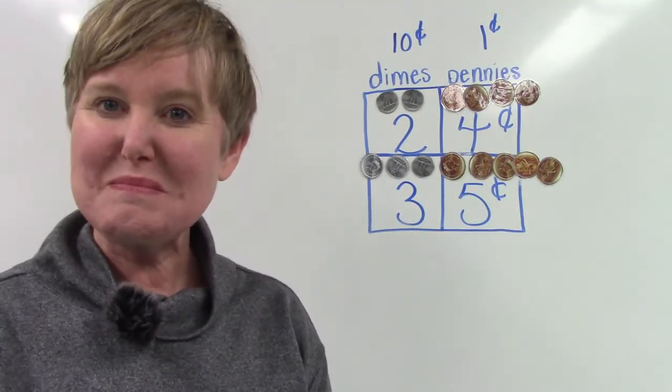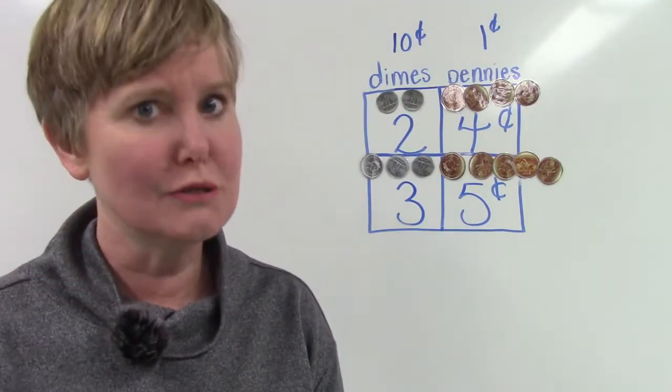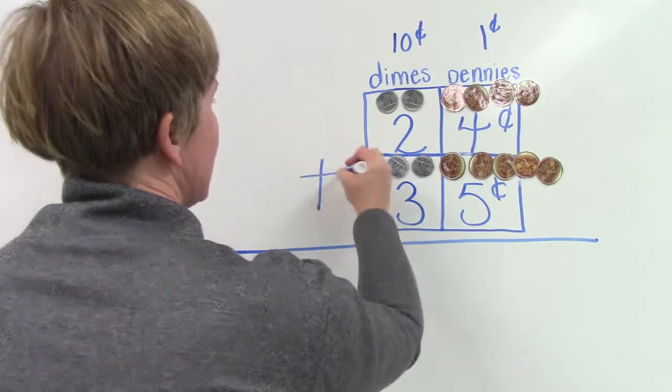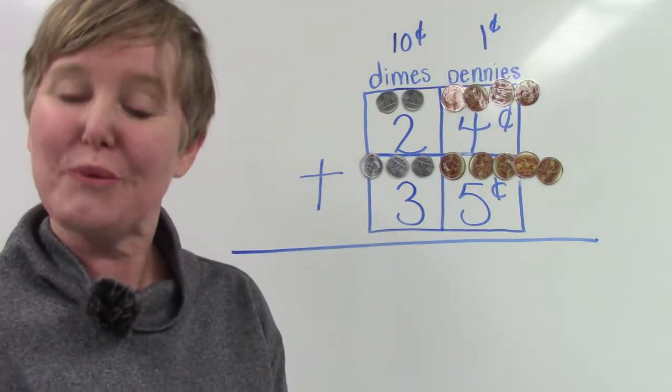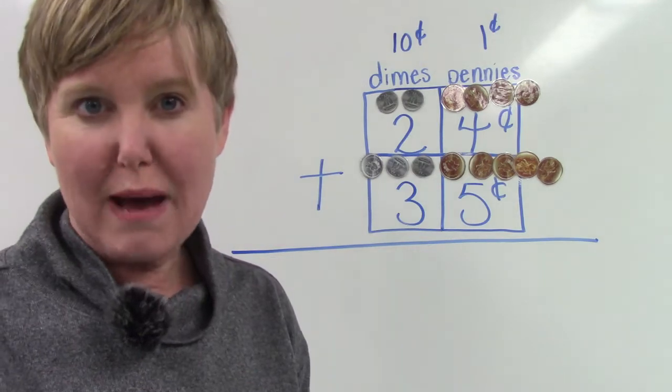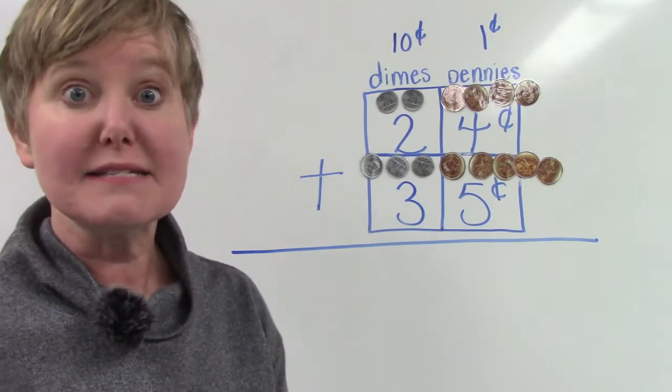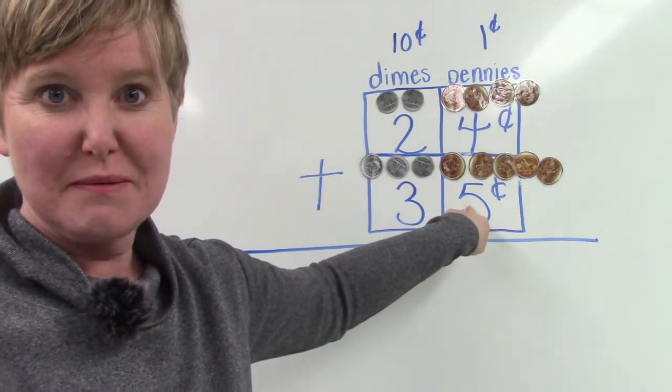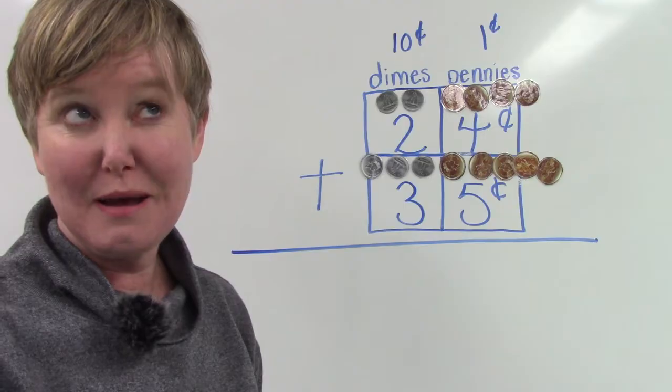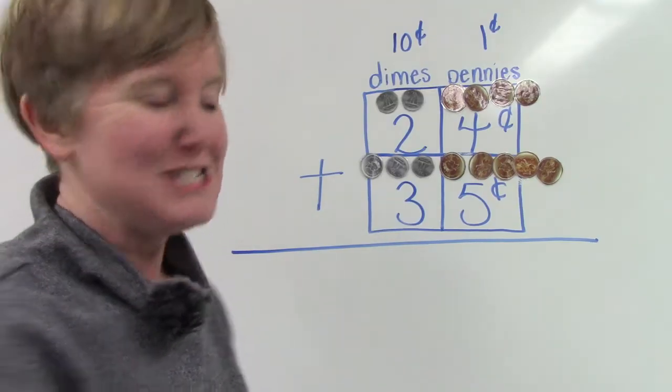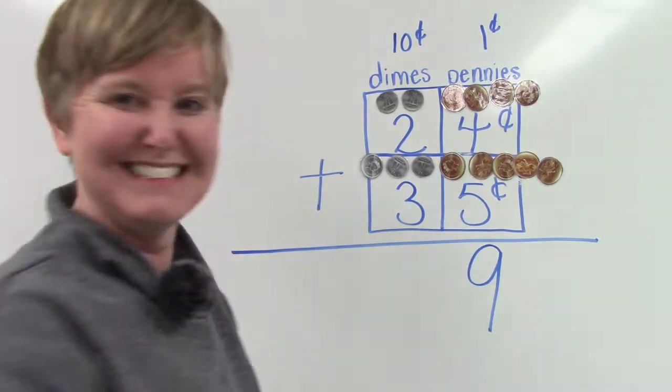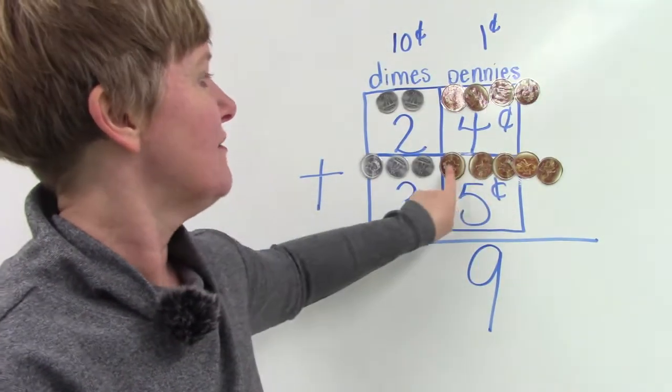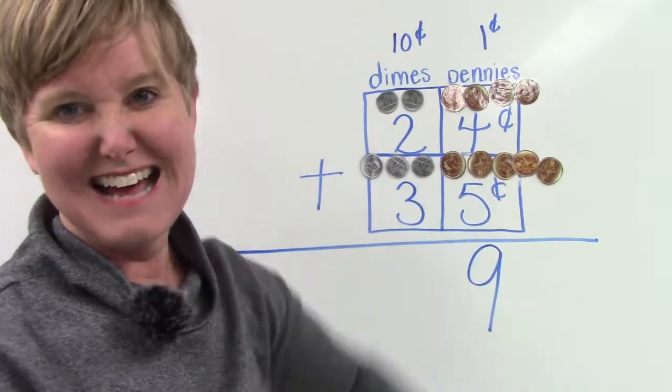Well, let's add these two two-digit numbers together. I'm going to draw a line here and a plus sign right there. We're going to start by adding our ones place, our pennies. We have four pennies plus five pennies. How many is that all together? Did you say nine? I hope so. Count with me. One, two, three, four, five, six, seven, eight, nine.